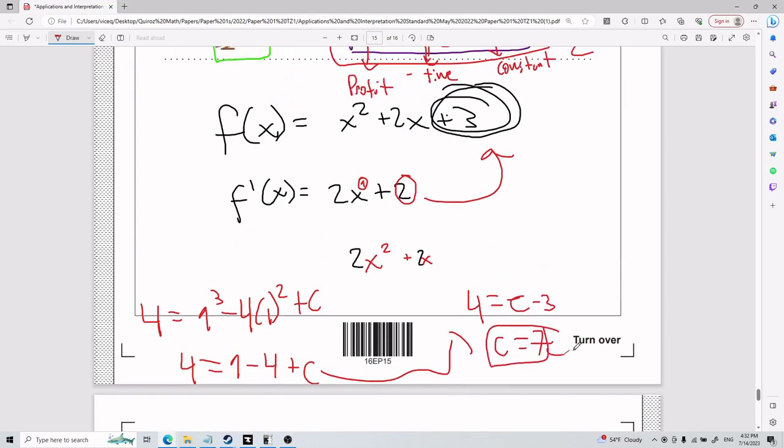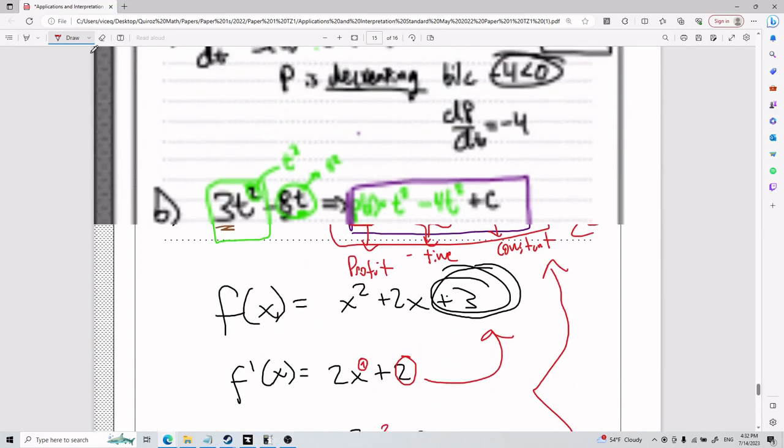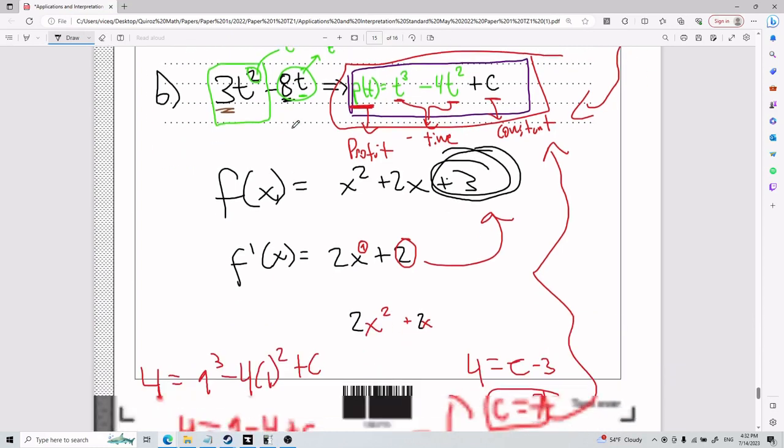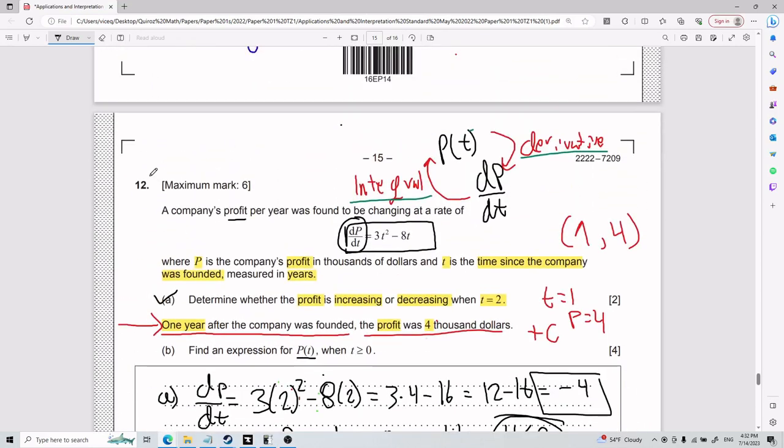So now that I found that c equals 7, I plug it back into my thing in purple. And my final answer is that P(t) equals t cubed minus 4t squared plus 7. This is for part B. And that is for number 12.